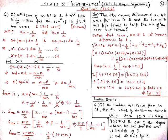Now we will put the value of d into equation number 1. From here we get a + (m-1) × (1/mn) = 1/n. On solving, we get a + 1/n - 1/mn = 1/n. So 1/n cancels and we get the value of a = 1/mn. Now we have both the value of a and d.